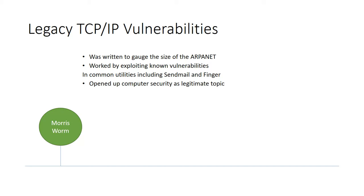The Morris Worm used vulnerabilities in those two utilities to gauge the size of ARPANET. The problem was that a computer infected with it could be infected more than once, and each additional infection would slow the machine down further. Eventually the machine would run out of resources and could not be used at all.